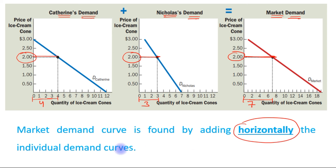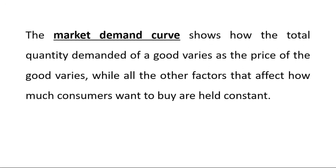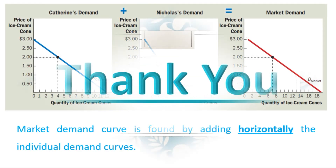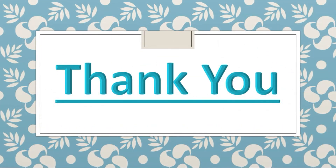We have added horizontally the individual demand curves. The market demand curve shows how the total quantity demanded of a good varies as the price of the good varies, while all the other factors that affect how much consumers want to buy are held constant. Thank you.